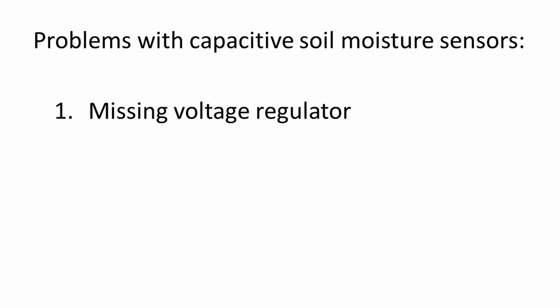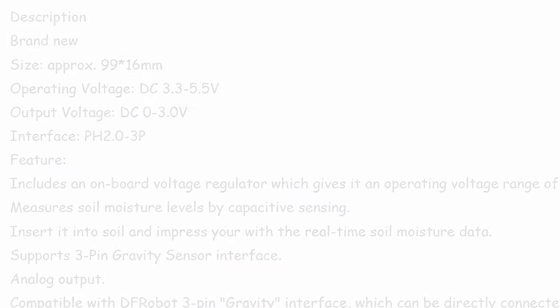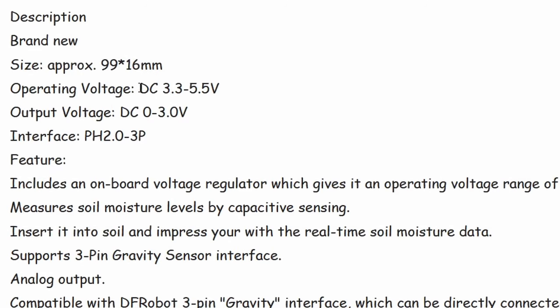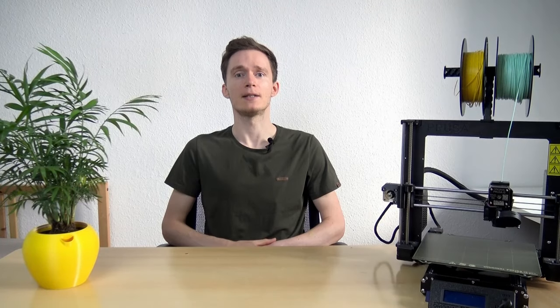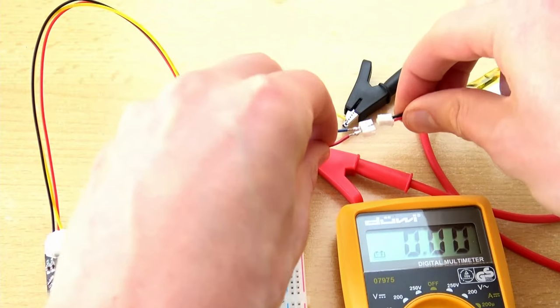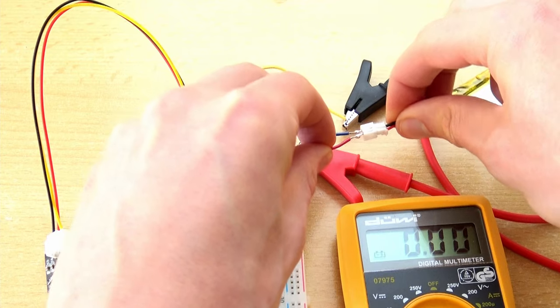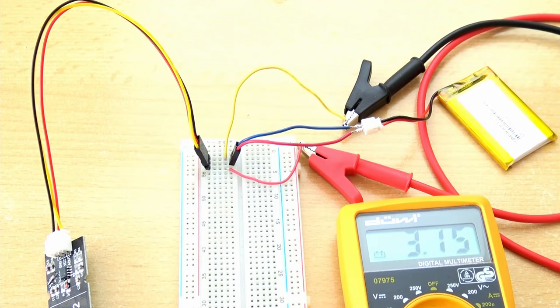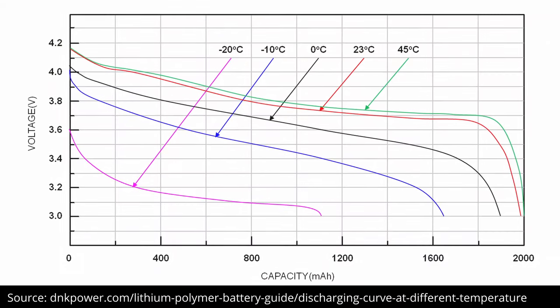Issue 1: Missing voltage regulator. In theory, these sensors could operate on a wide variety of voltages. But of course, the voltage at the analog output of the sensor also depends on the supply voltage. This is a problem if you are supplying the sensor with a non-constant voltage power source, like pretty much any type of battery. For example, if you are using a 3.7V lithium-ion battery, it will not output 3.7V when fully charged, but rather 4.2V at room temperature.